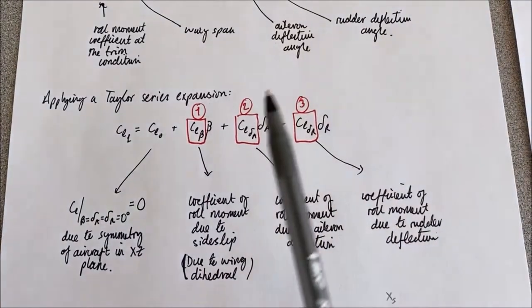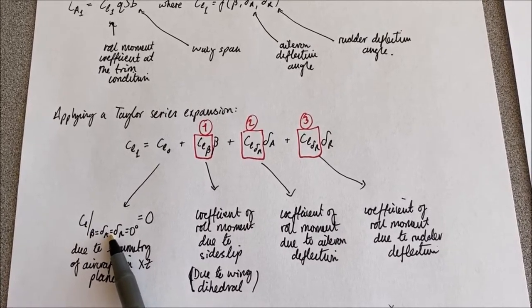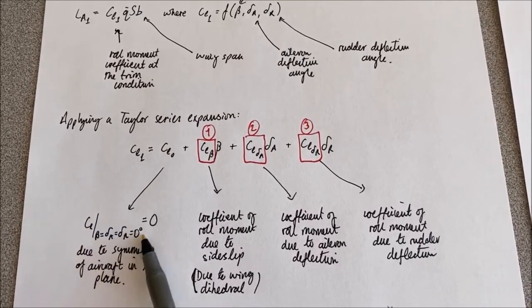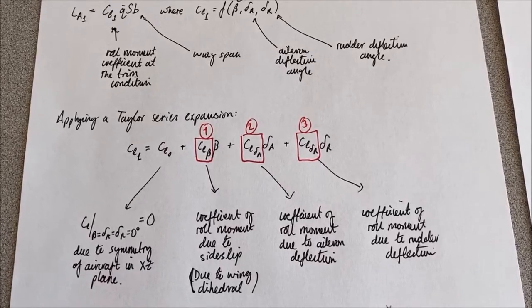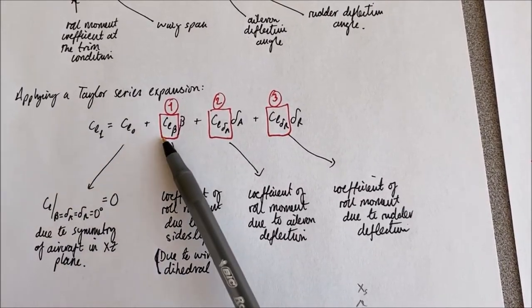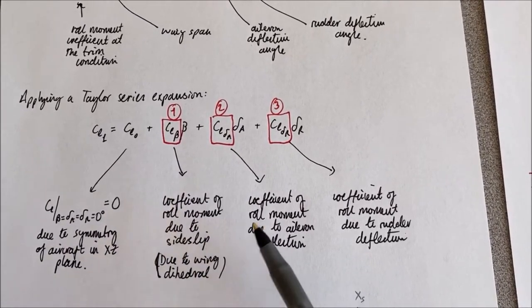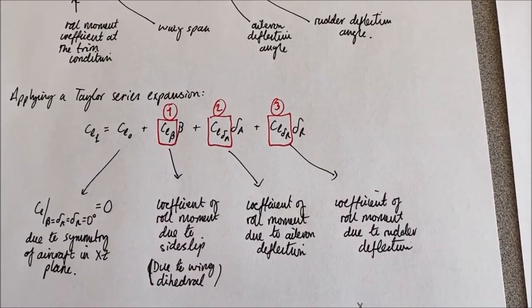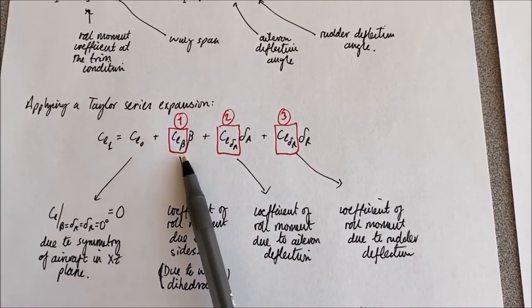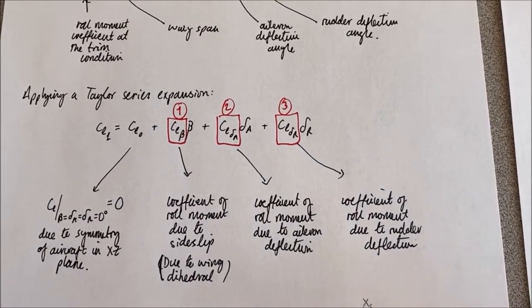Because of the symmetry of our aircraft in the xz plane, if we have no side slip angle, no aileron deflection, and no rudder deflection angle, then we have no roll moment coefficient. That leaves three roll moment coefficients — labeled one, two, and three — which we'll derive individually: the first due to side slip, the second due to aileron deflection, and the third due to rudder deflection. The main contributing factor to roll moment due to side slip is wing dihedral.